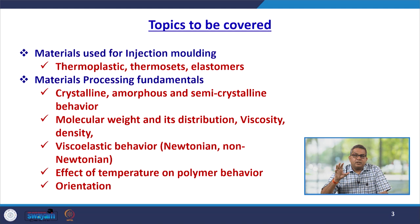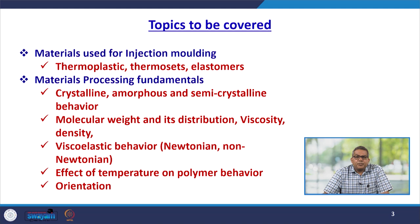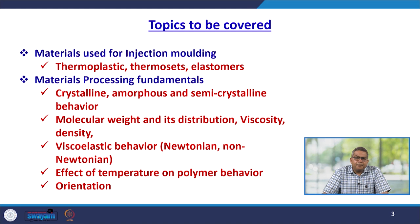This particular information is extremely important. We have decided to cover the topic pertaining to materials which can be used in the injection moulding machine. Broadly, we can divide these materials into thermoplastics, thermosets, and elastomers. We will also discuss material processing fundamentals like crystalline, amorphous, semi-crystalline behaviour, molecular weight and its distribution, viscosity, density, viscoelastic behaviour, Newtonian, non-Newtonian flow, effect of temperature on polymeric behaviour, and orientation.